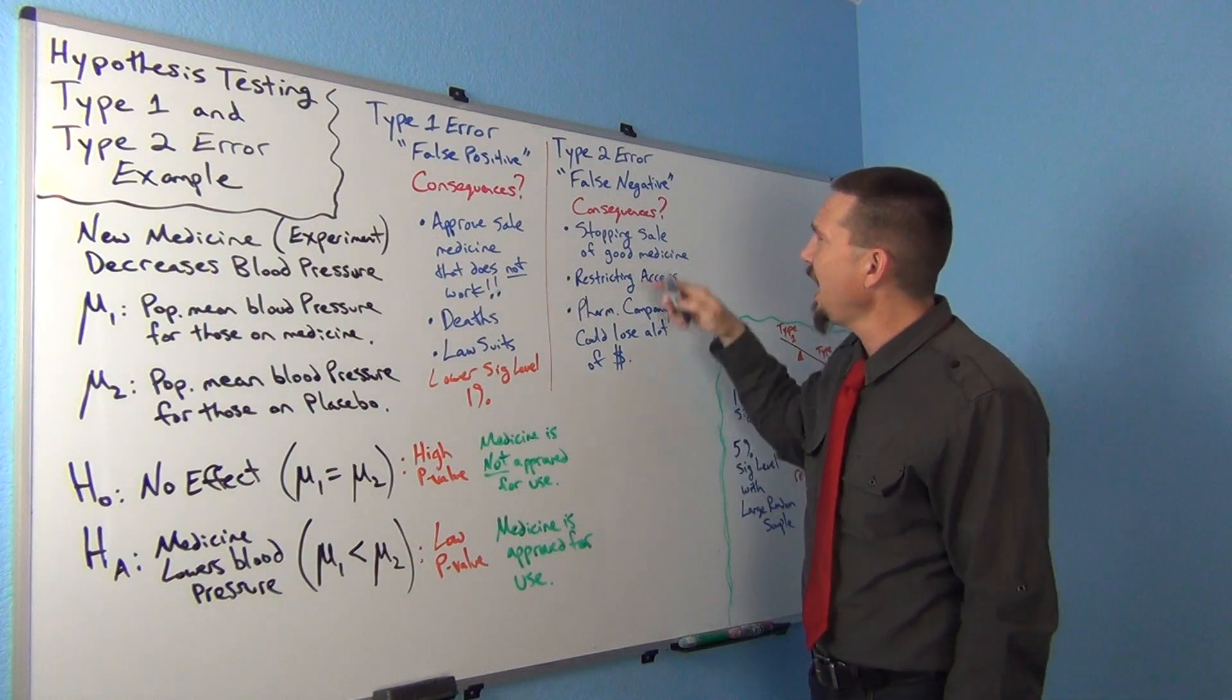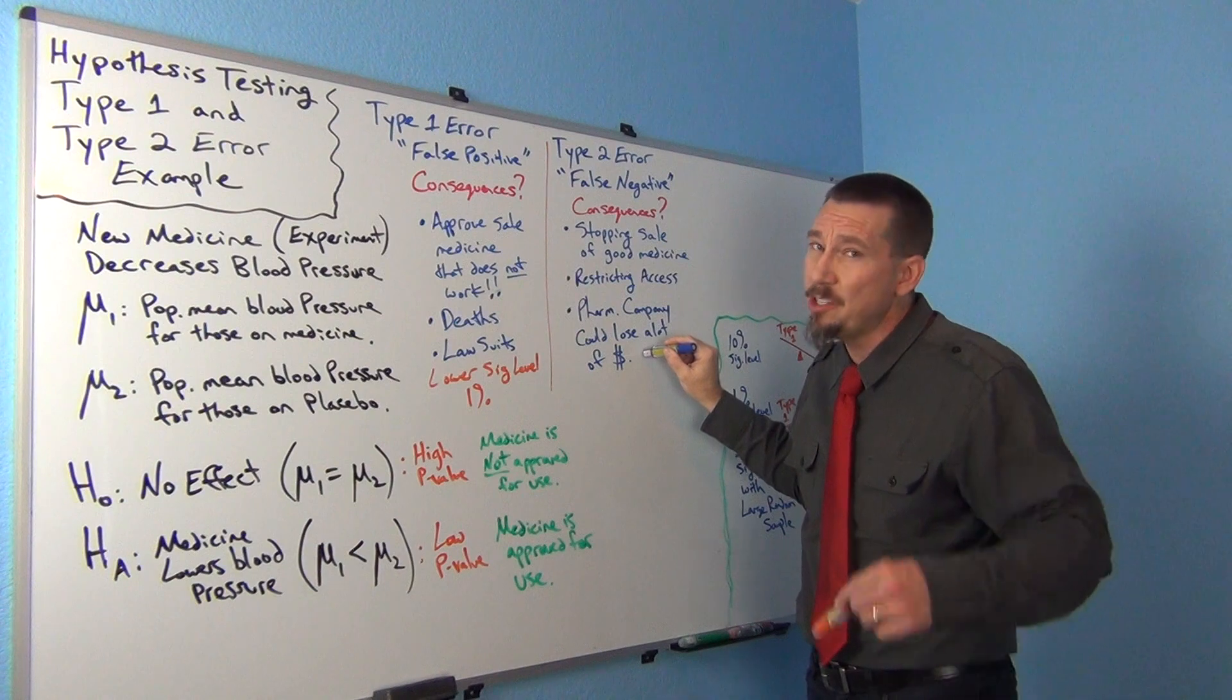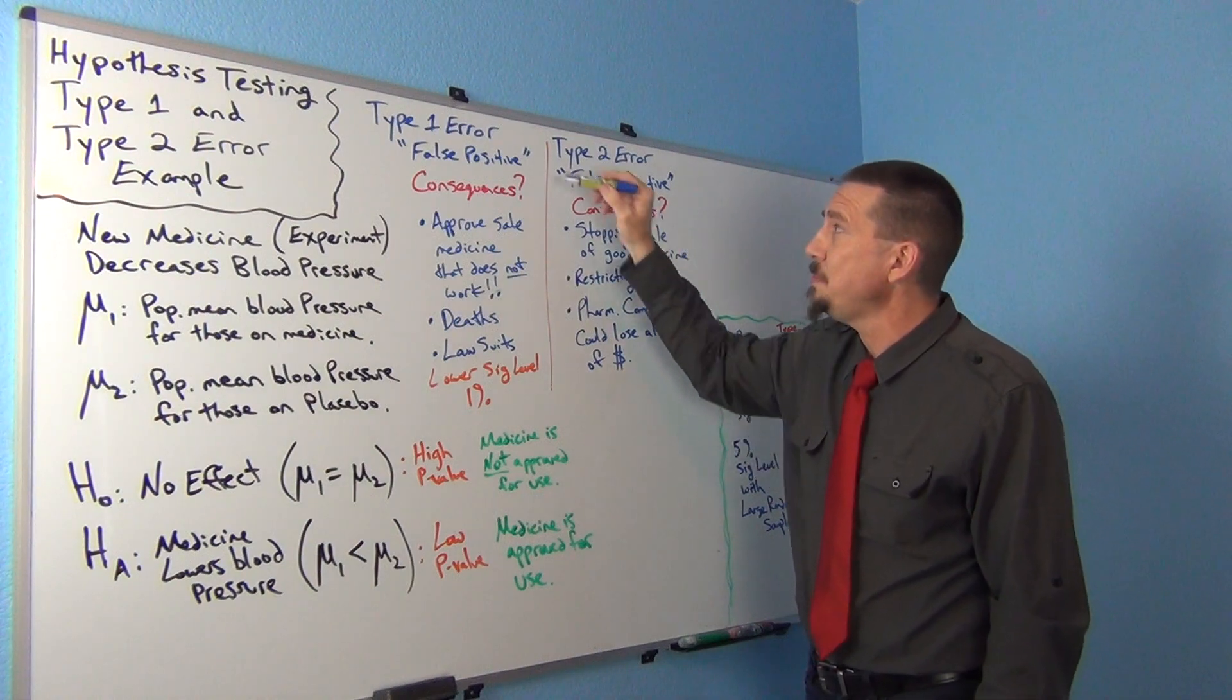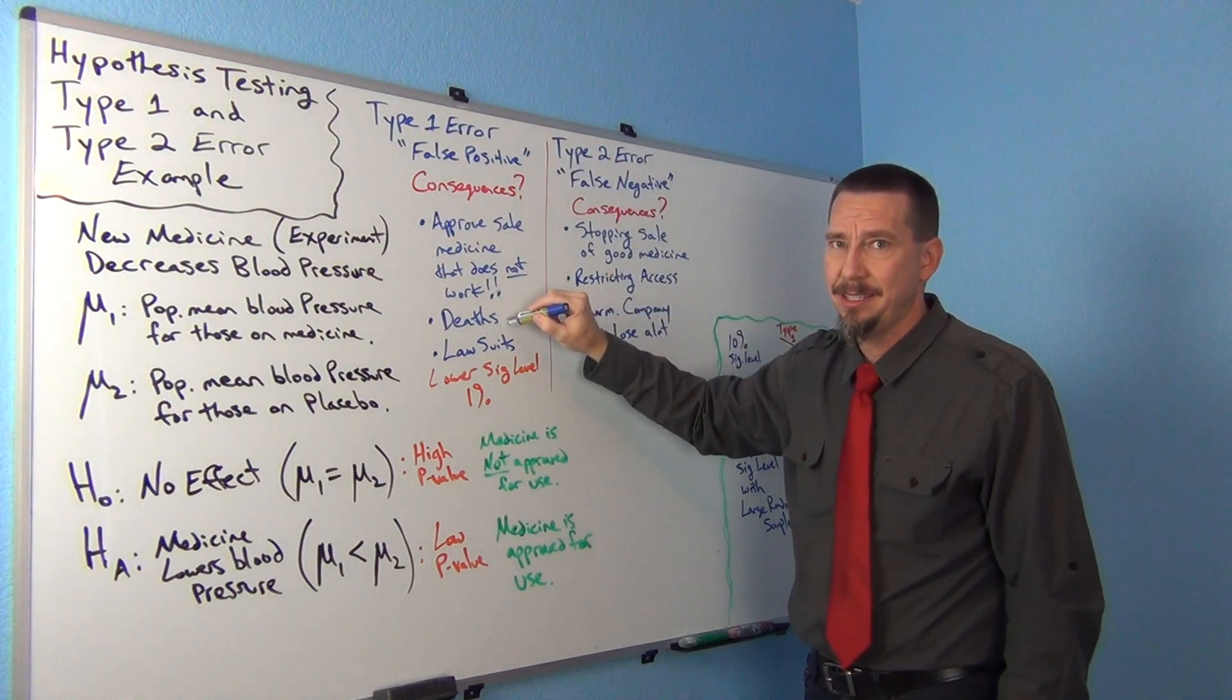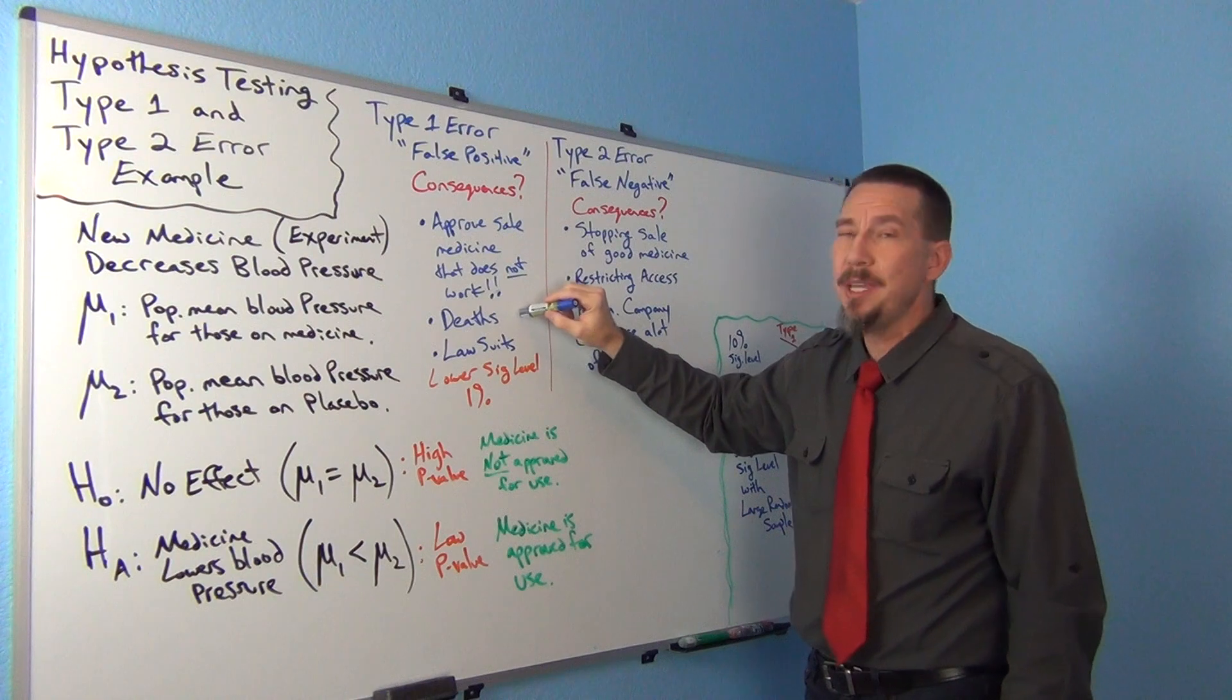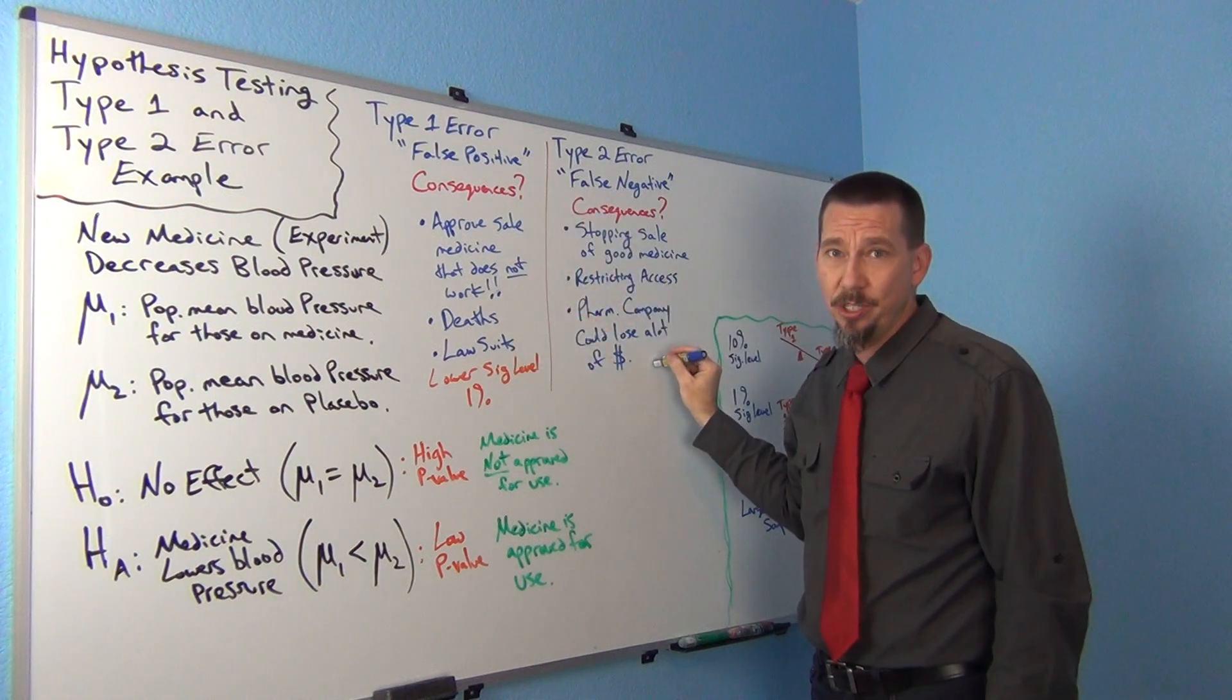Okay, so Type 2 error, the pharmaceutical company loses money. Obviously I don't want that to happen, but Type 1 error was deaths. It seems to me it's pretty obvious that Type 1 error is much worse than Type 2.